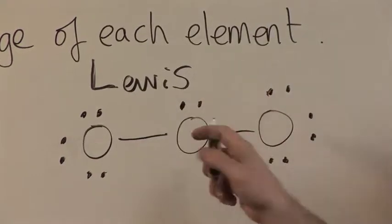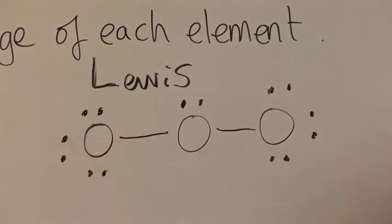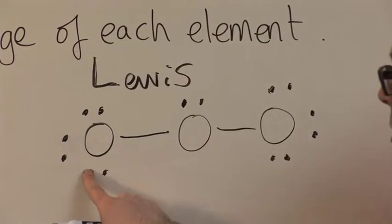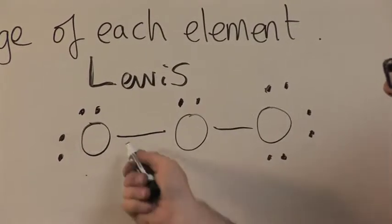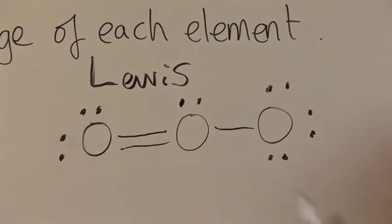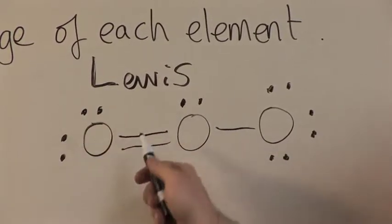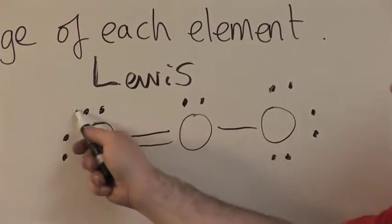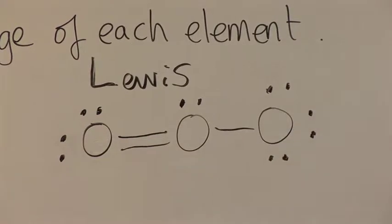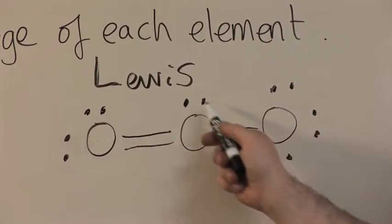So to stabilize the central oxygen, one or the other peripheral oxygens is now going to share two of its electrons. So it still has access to them, but it's donating them to be shared. Now this oxygen has eight electrons, two, four, six, eight. This oxygen has two, four, six, eight.